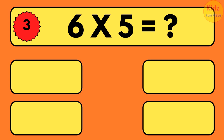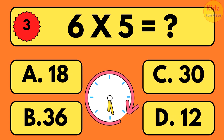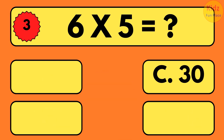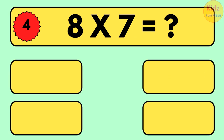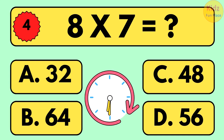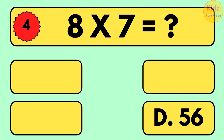6 times 5 is equal to what? 6 times 5 is equal to 30. 8 times 7 is equal to what? 8 times 7 is equal to 56.